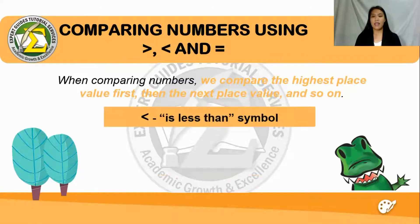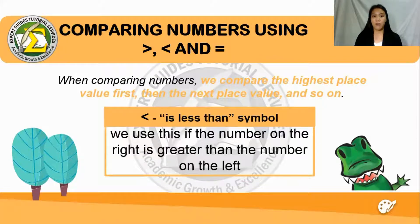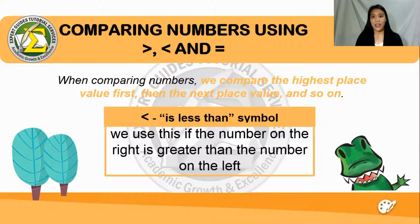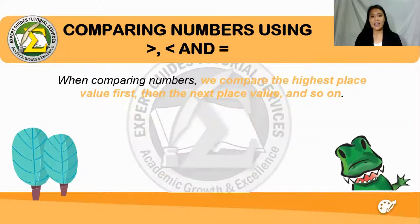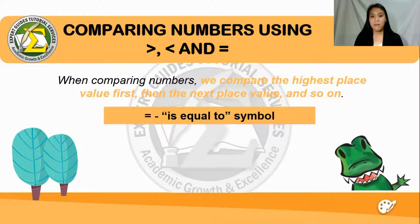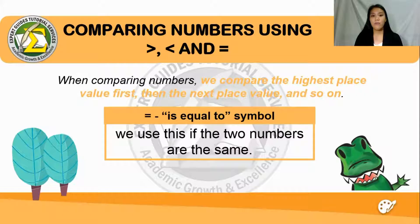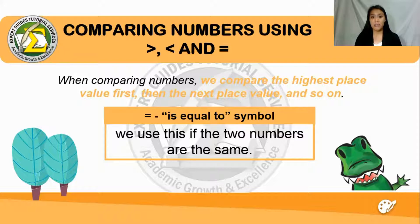Next, we have the less than symbol. The less than symbol is used if the number on the right is greater than the number on the left. And lastly, we use the equal symbol when we compare two numbers that are the same.